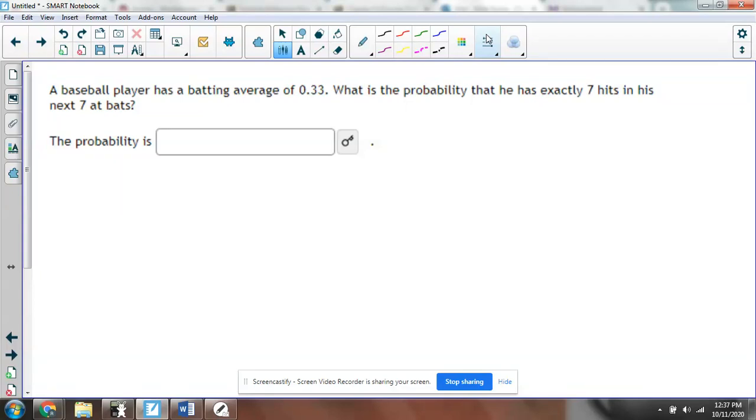This will give you a quick introduction to the binomial distribution and how to calculate certain things in your calculator. A baseball player has a batting average of 0.33, that means he hits 33% of the time he goes up to bat. So what is the probability that he has exactly 7 hits? What is the probability of the number of hits being 7?